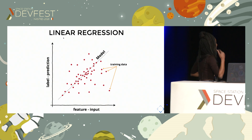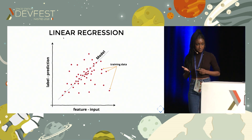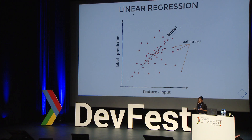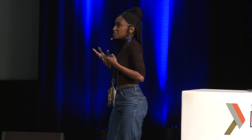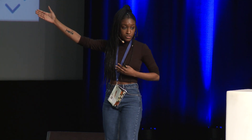Here is the case of a linear regression model. A linear regression model is a model based on continuous values, like a mathematical function. In order to train your model, what you will need is some training data. Training data is just the correlation between an input — also called a feature — and an output, also called a label.